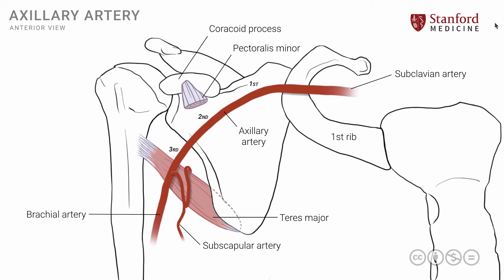There's another branch from the same third part of the axillary artery known as the circumflex humeral artery. In fact, there are two: a posterior circumflex artery and an anterior circumflex artery. These two arteries anastomose around the surgical neck of the humerus. This is the posterior circumflex and this is the anterior circumflex, and these two then anastomose around that surgical neck of the humerus. These are important branches from the axillary artery that have clinical significance.